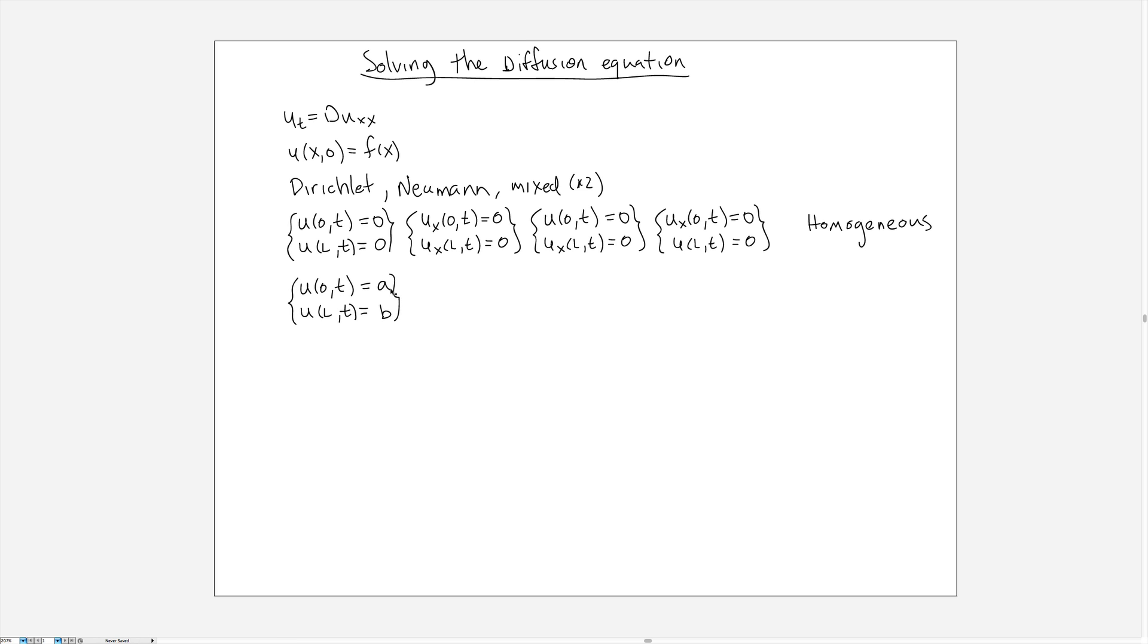So for example here we have a Dirichlet condition but it's got an A and a B where A and B might not necessarily be 0. Here we have a Neumann condition where we specify the value of the function slope at the endpoints to be C and D and so on. We can do the same for the mixed conditions just replacing the zeros by non-zero values and these boundary conditions are called non-homogeneous.